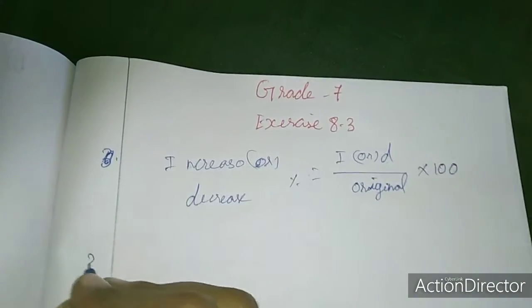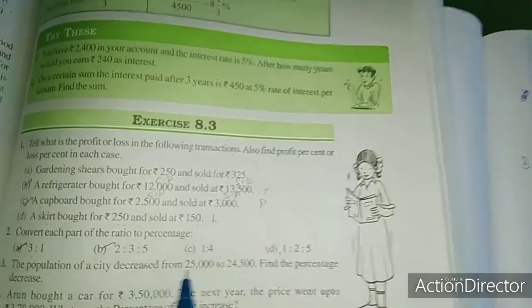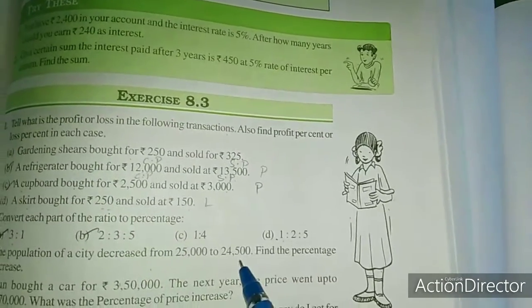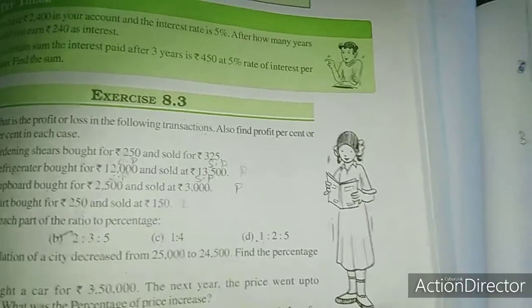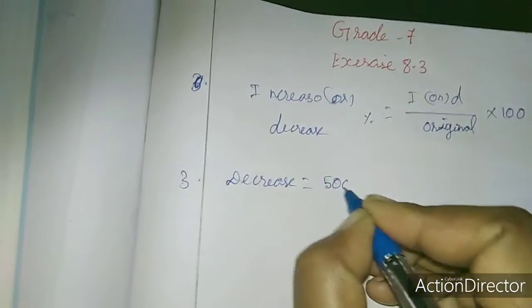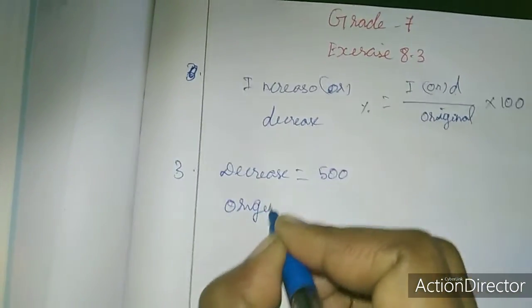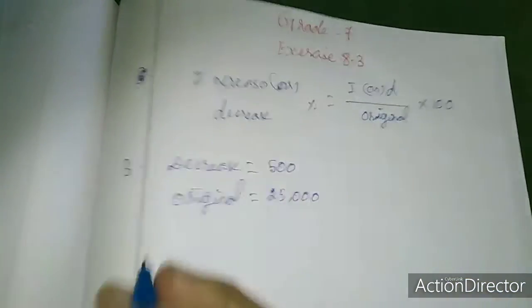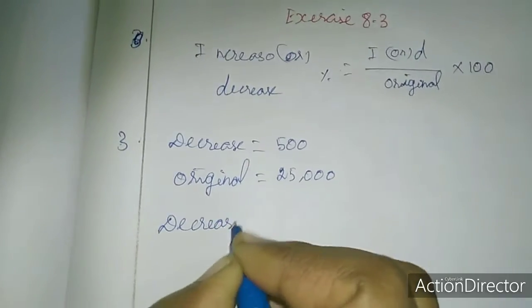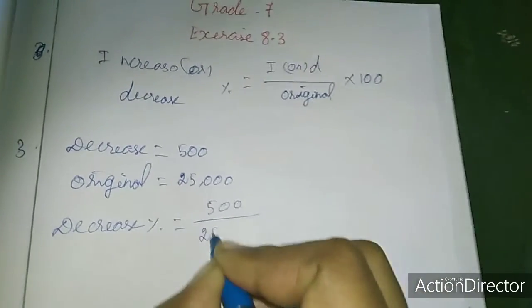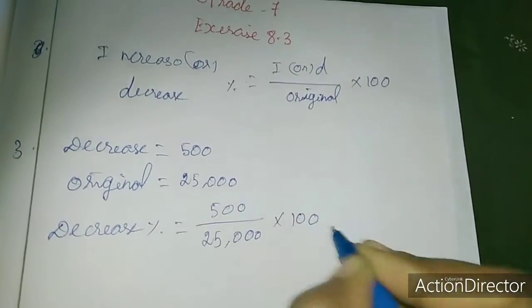This is the third sum. The population decreased from 25,000 to 24,500. The decrease is 500. So decrease percentage equals decrease divided by original amount into 100. That is 500 divided by 25,000 into 100.